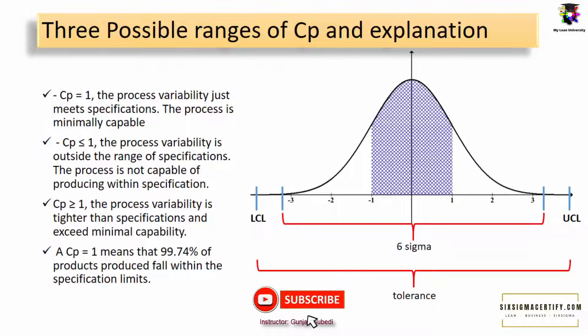There are three possible ranges of values for Cp. If Cp is equal to 1, the process variability just meets the specification. The process is minimally capable. If the Cp is less than 1, the process variability is outside the range of specification. The process is not capable of producing within specification. If Cp is greater than or equal to 1, the process variability is tighter than specification and exceeds minimal capability. A Cp value of 1 means 99.74% of the product produced falls within the specification limit.